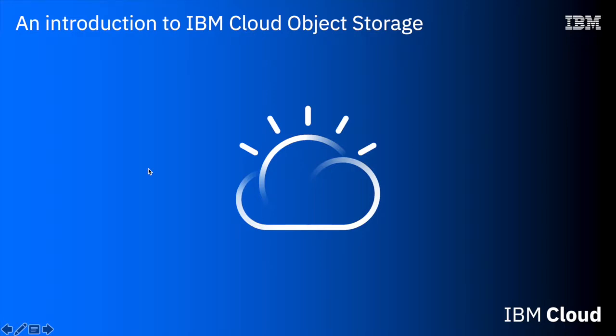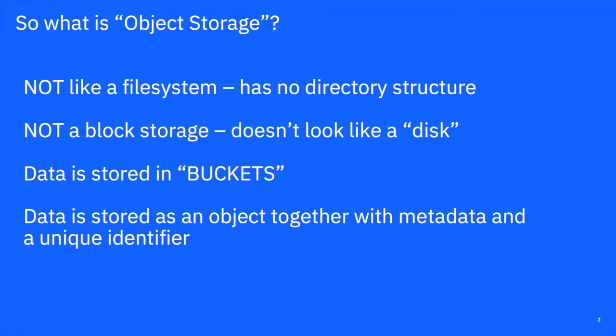In this short video, I'd like to introduce you to IBM Cloud Object Storage. So what is object storage? It's somewhat different to other forms of storage that you might have come across before. It's not like a file system — there's no directory structure or tree structure of folders in which you can place files. Similarly, it's not like block storage in that it doesn't look like a disk.